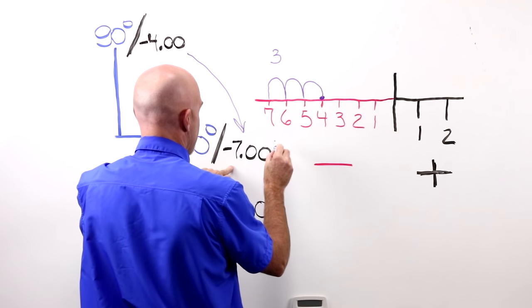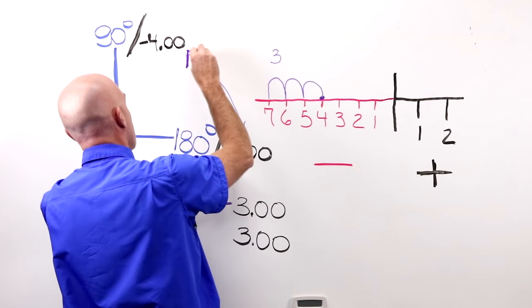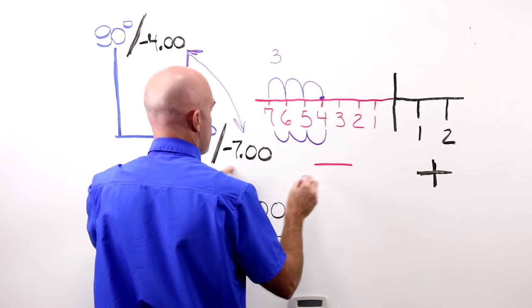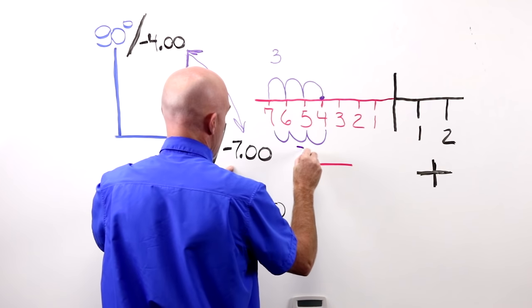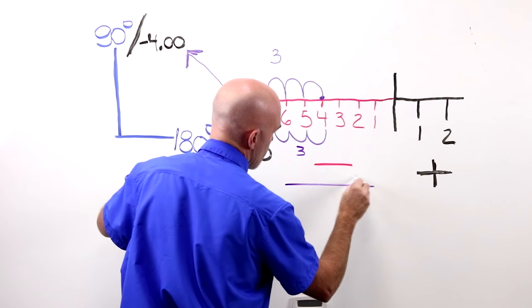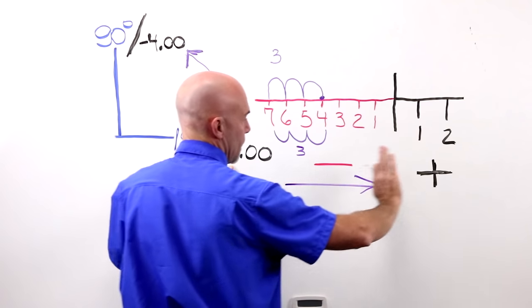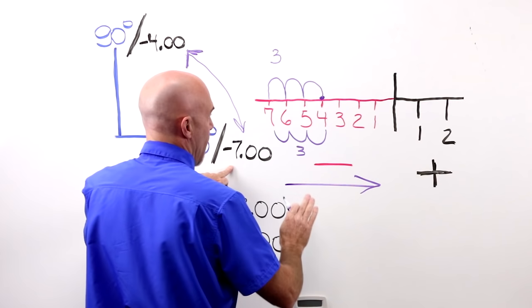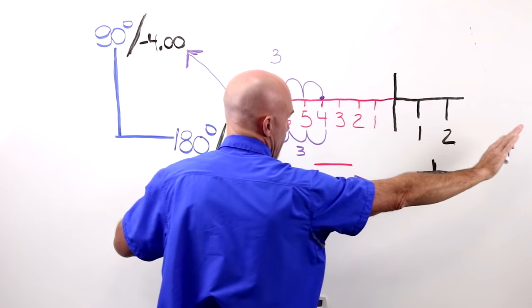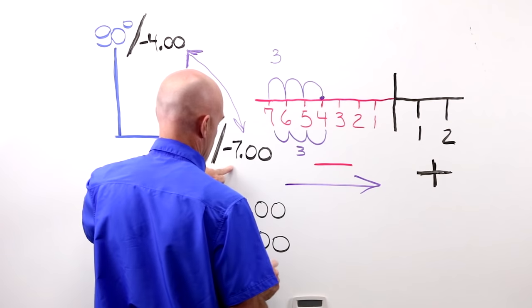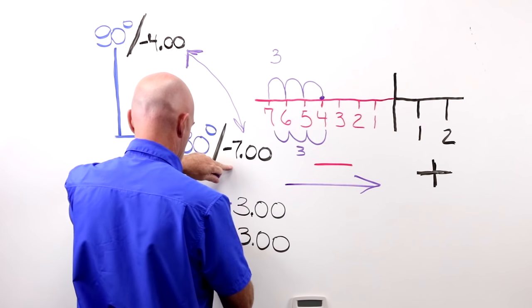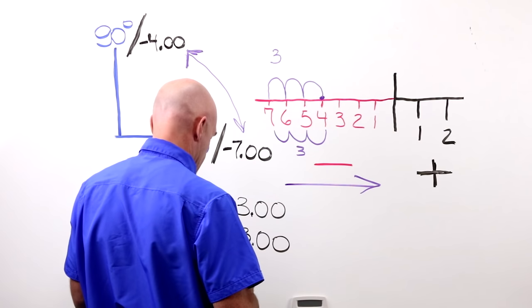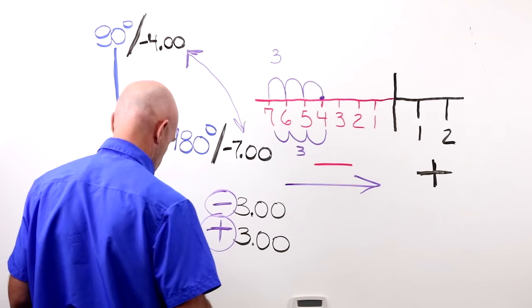If I'm at seven, and I go to four, one, two, three, I've got my three again, but I'm heading in the plus direction. I'm heading into the plus side of the drum. I'm still in the minus numbers, but I'm heading up in that direction. So, for my seven to four, I would have a plus three.